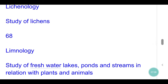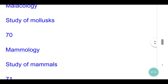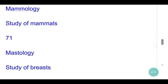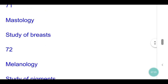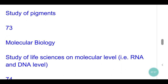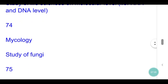Limnology: study of freshwater lakes, ponds and streams in relation with plants and animals. Malacology: study of molluscs. Mammalogy: study of mammals. Mastology: study of breasts. Melanology: study of pigments. Molecular Biology: study of life sciences at molecular level, i.e. RNA and DNA level. Mycology: study of fungi.